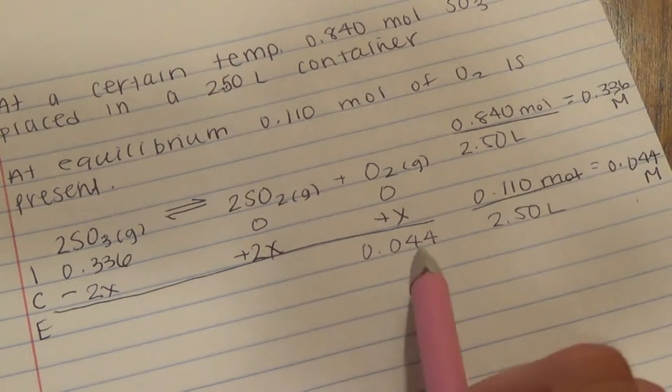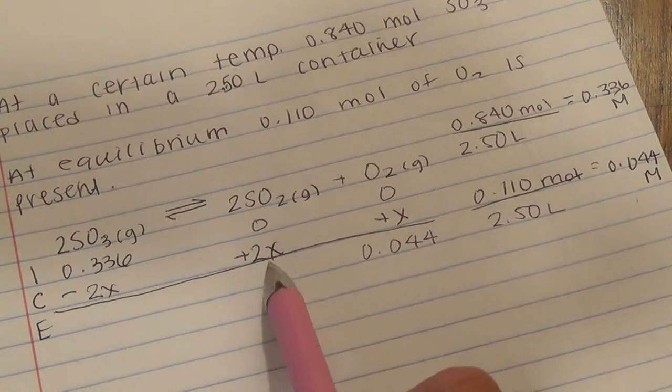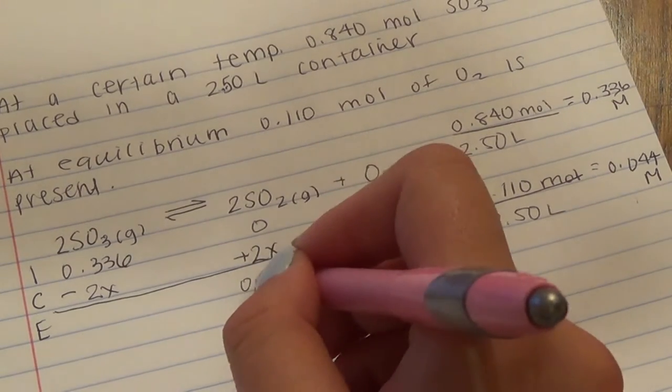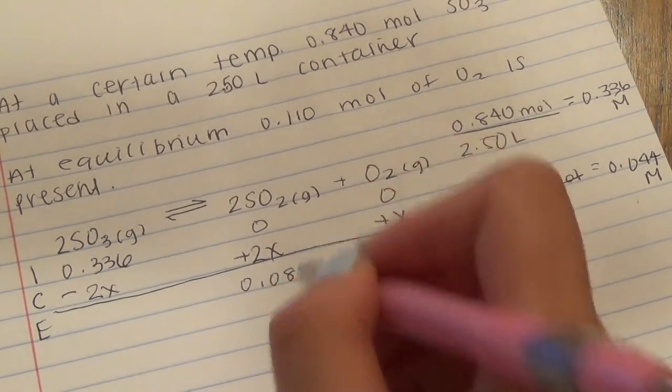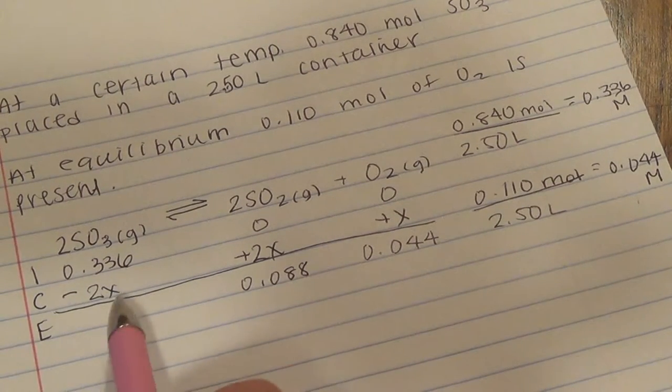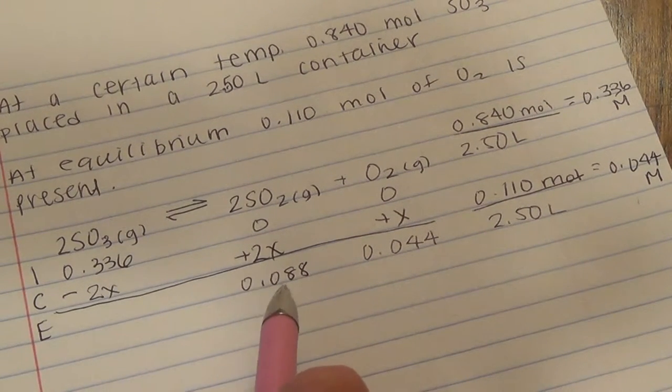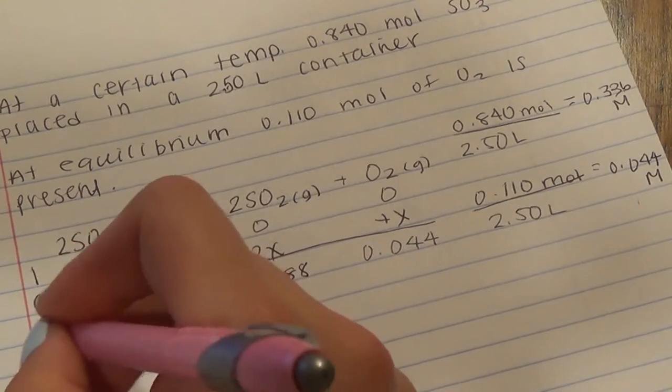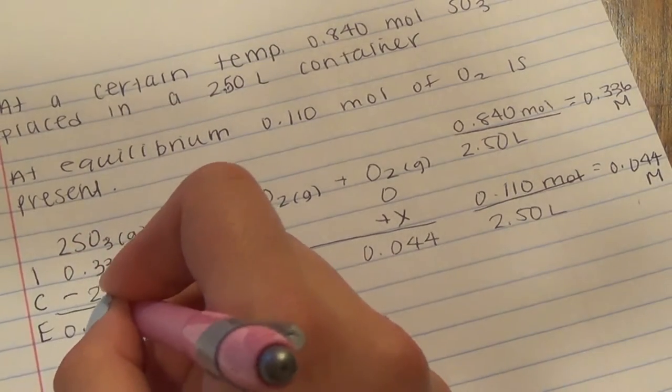So 2x will equal 0.088. So this is this value in molarity. And then this minus the 0.088 gives us 0.248.